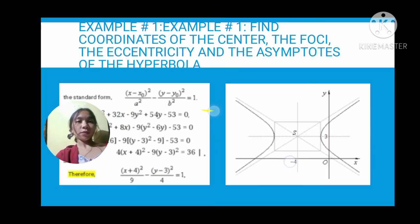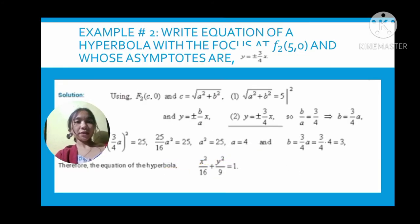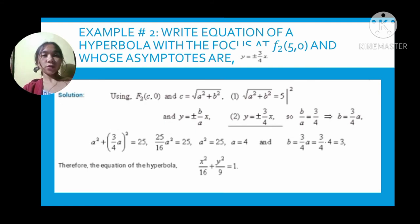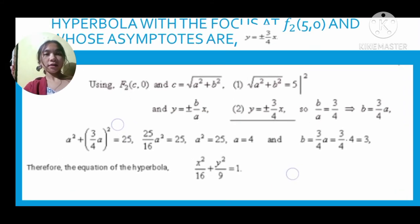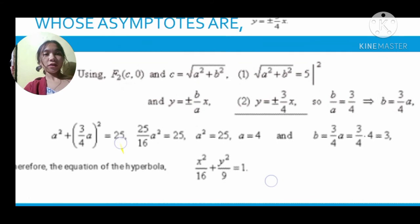We are going to go to example number two. Write the equation of the hyperbola with the foci at (±5, 0) and the asymptotes are y = ±3/4x. In the solution we are going to use... so this is what the solution looks like.